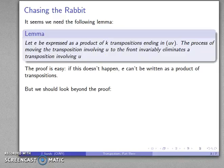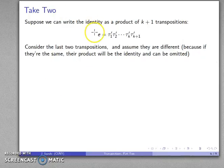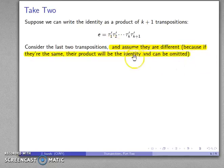We should actually look a little bit beyond the proof. The proof itself is a very simple proof, but we might ask ourselves how it happens. We know it has to happen, but how can a transposition involving u be eliminated? Well, we can take a note from our earlier observation. Back when we assumed the identity could be written as a product of k plus 1 transpositions, we considered the last two transpositions and assumed they were different, because if they are the same, their product is going to be the identity and we don't have to include them.